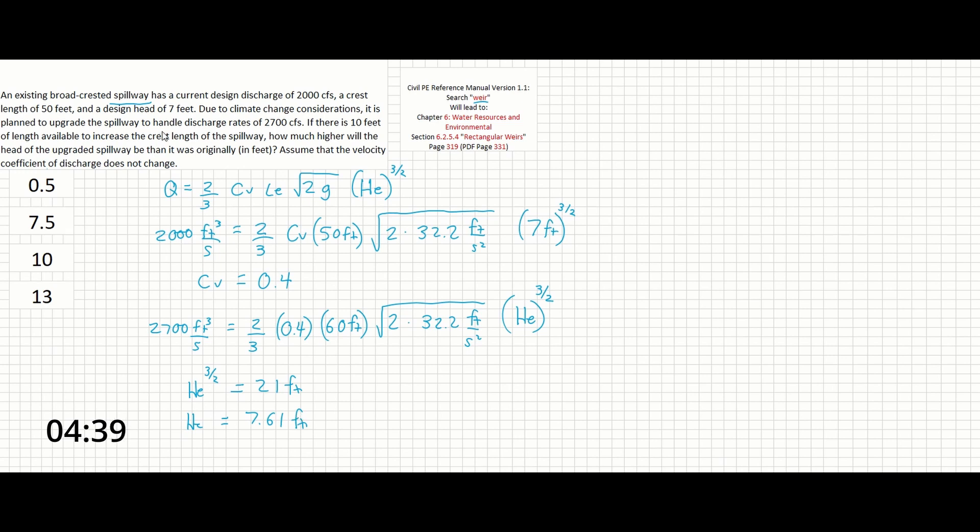Now the problem asks, how much higher will the head of the spillway be when it's upgraded than it was originally? So really what we have to do now is 7.61 minus 7, which is the original, and that'll get us 0.61 feet, which 0.5 is our closest answer over here.